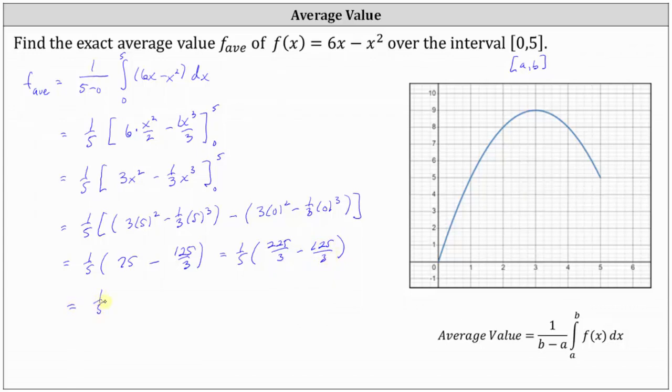Here we can simplify before multiplying. There's 1 5 in 5 and 25s in 100. The exact average value of f of x over the closed interval from 0 to 5 is 20 thirds.